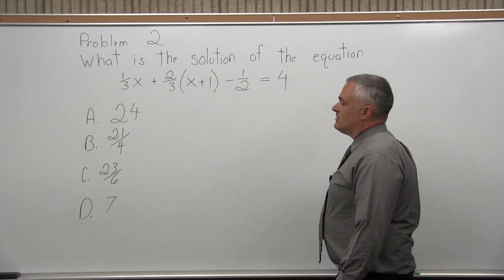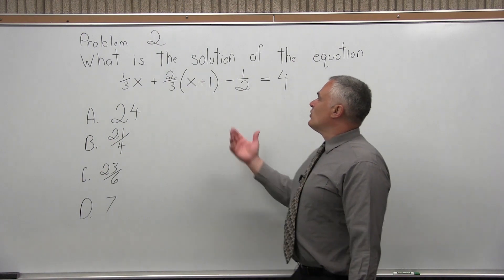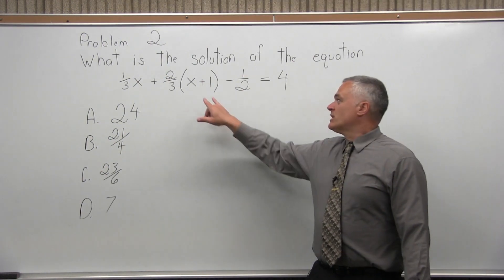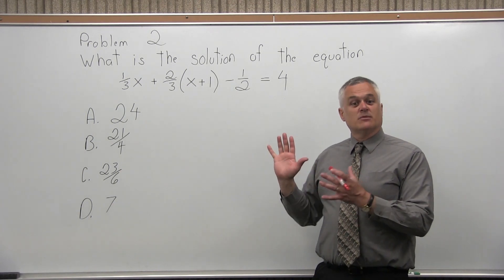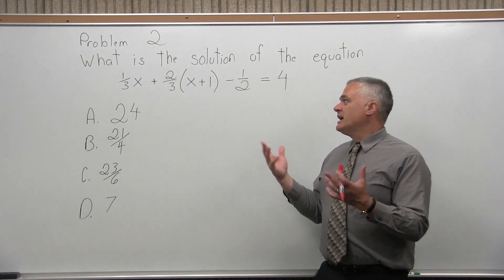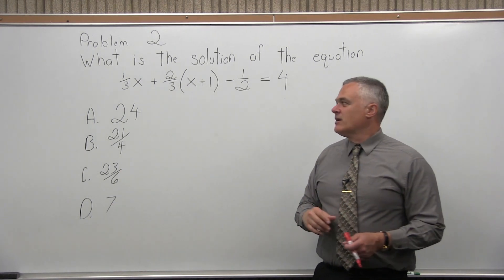One of these is the right answer. Let's figure out which one it is. When you solve an equation, you want to clear any parentheses that you have, get the x's together on one side, get the numbers together on the other side of the equals. And then, if there's something in front of the x, you can divide it out.